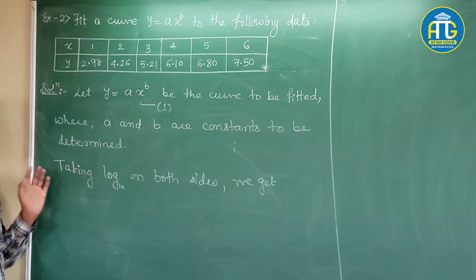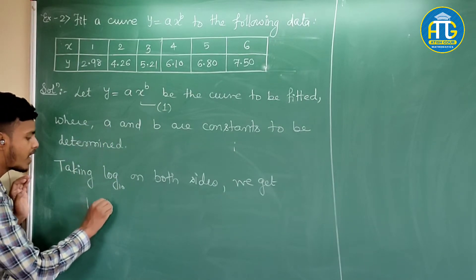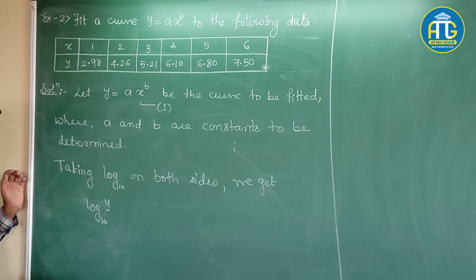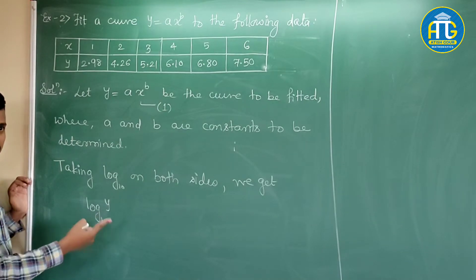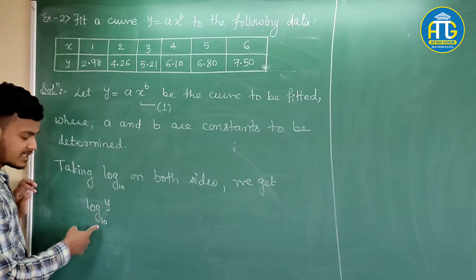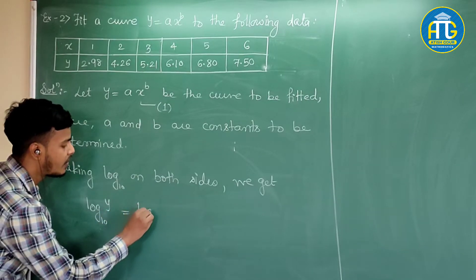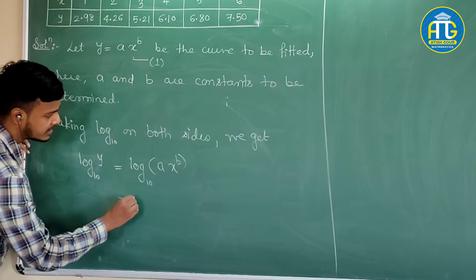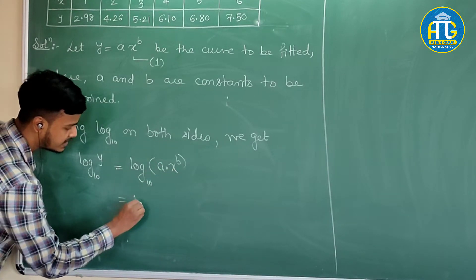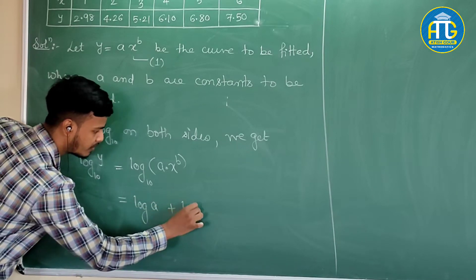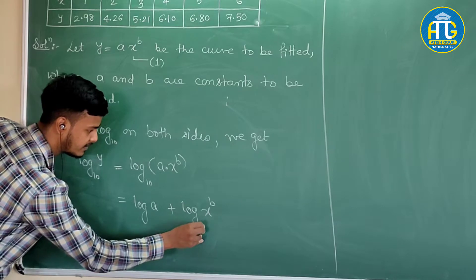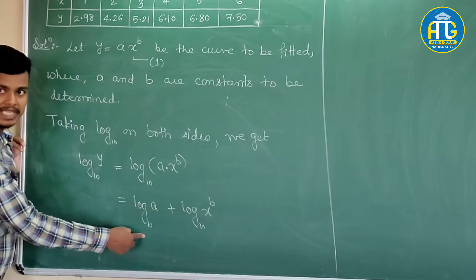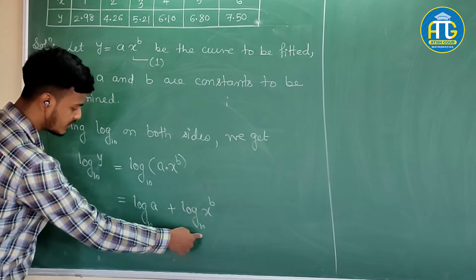After taking log on both sides, this is log y to the base 10. I am intentionally clarifying: in the last lecture some of you were confused whether it is to the base 10 or base e. In statistics, it is always to the base 10. So we get log(ax^b) base 10, and applying the property log(a·b) = log a + log b, this becomes log a plus log(x^b) to the base 10.